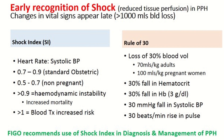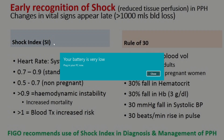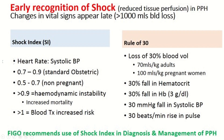For early recognition of shock — meaning reduced tissue perfusion, especially in postpartum hemorrhage — shock index is important in obstetrics and gynecology because changes in vital signs appear late when there is more than 1000 mls of blood loss. It is the ratio of heart rate to systolic blood pressure. In standard obstetric patients it ranges from 0.7 to 0.9; in non-pregnant individuals it ranges from 0.5 to 0.7. When it is more than 0.9 it shows hemodynamic instability and increased mortality, and when it is more than 1 the blood transfusion risk increases. The rule of 30 is also important to assess the level of shock.